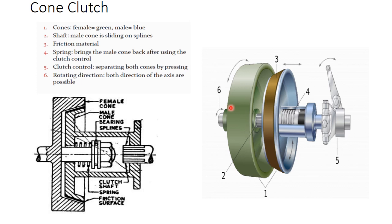Here the schematic diagram shows the female cone, this is the male cone, this is the bearing, this is the splines, clutch shaft, that is the clutch shaft. This is the spring that can be compressed to the male cone in the direction of engagement.